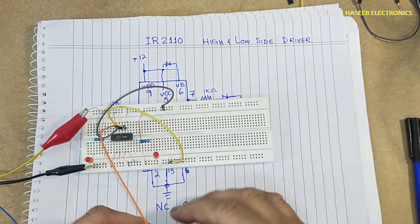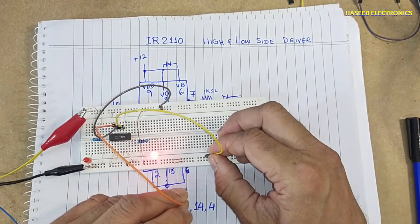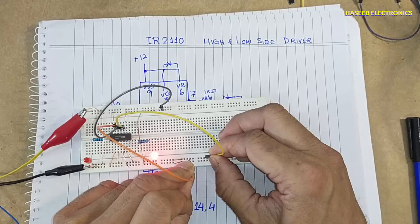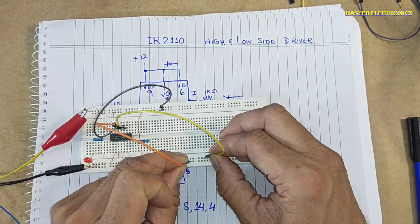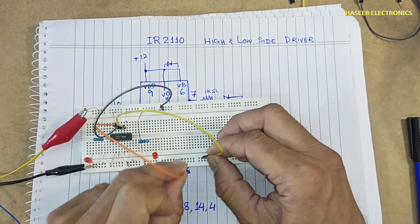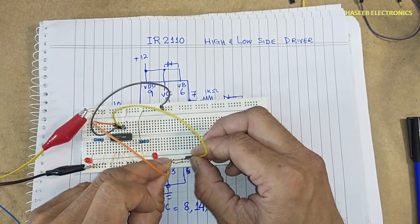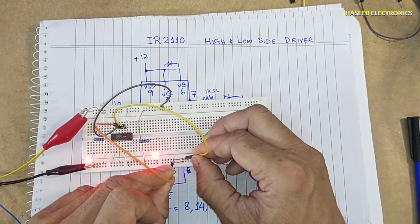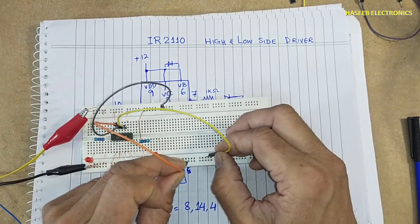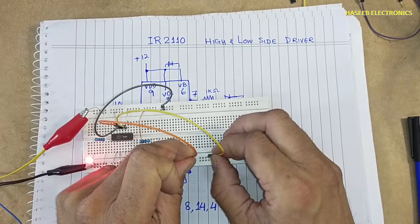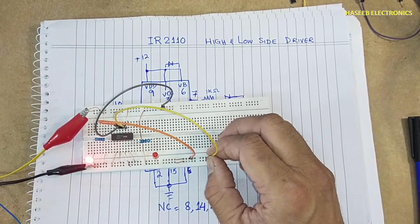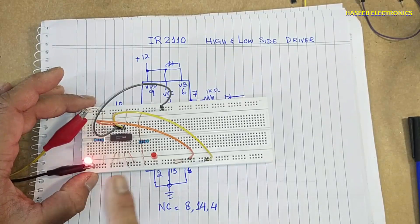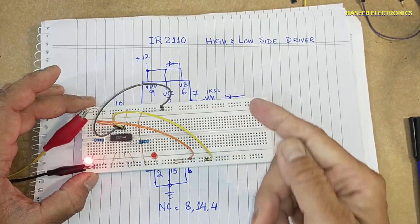Now we will switch one by one. This time both MOSFETs are turning on together. Why? Because we are not using bootstrap capacitors. If this IC is working in this way, that means that IC is good.